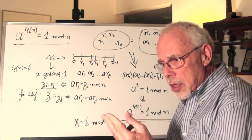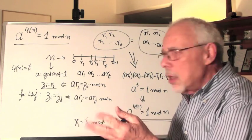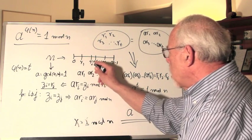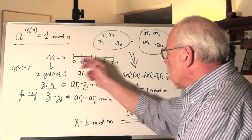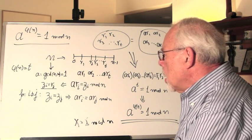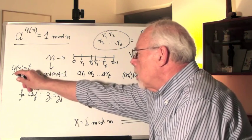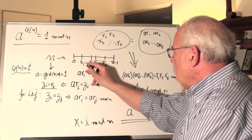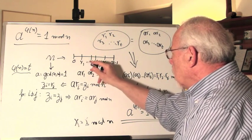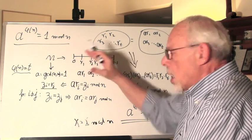Because phi n is defined as the number of numbers that are co-prime with n. So we mark them R1, R2, R3, Rt. We call t, just for simplicity, the value of phi n. So phi n equals t, so it will be easier to write.